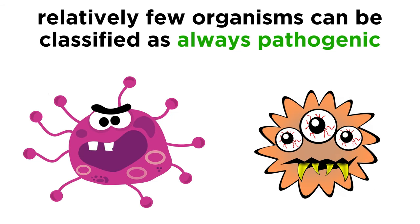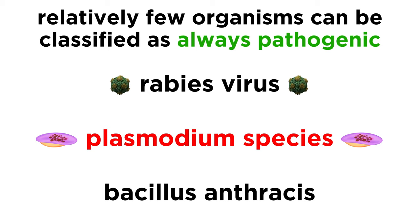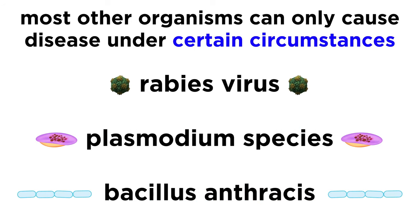Additionally, there are relatively few organisms that can be classified as always being pathogenic. Some examples of always pathogenic microorganisms are the rabies virus, Plasmodium species, and Bacillus anthracis. For the most part, microorganisms are only able to cause disease under specific circumstances.